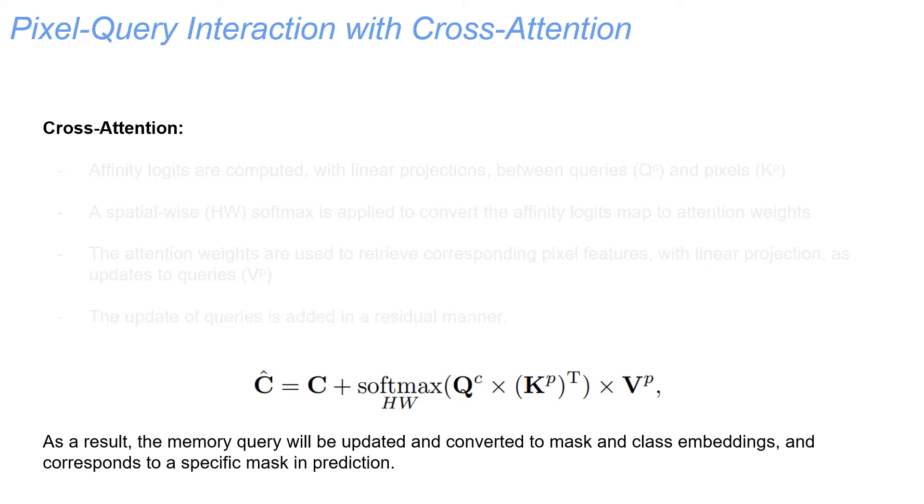As a result, the memory queries will be updated and converted to mask and class embeddings, and correspond to a specific masking prediction. Nonetheless, the cross-attention is applied without any modification, and thus may not be optimal for segmentation. Besides, we still lack an intuitive explanation for its working mechanism.